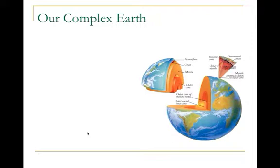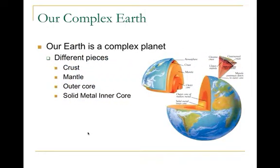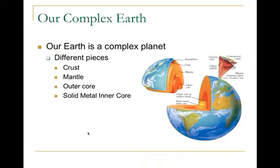Here we have a cross-section of our planet showing its layers, like a parfait. At the top is the crust, where we live. Below that is the mantle — it's fluid, not more fluid than concrete, but with the weight and heat of the earth it does move. Below that is the outer core, which is liquid molten metals, and at the center is the solid metal inner core.